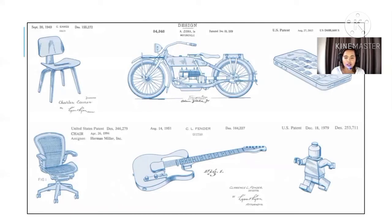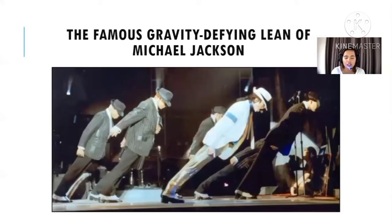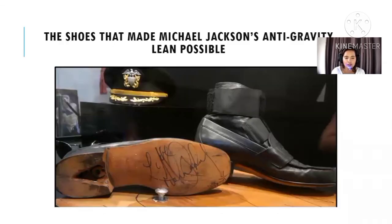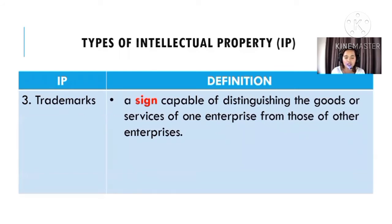Other patented items include the cell phone, the iPhone, the chair, and the guitar — each has an owner, designer, or inventor. A famous example of a patent is Michael Jackson's anti-gravity lean shoes — the specially designed shoes enabled Michael Jackson to perform his gravity-defying lean. That shoe design is a patented invention.